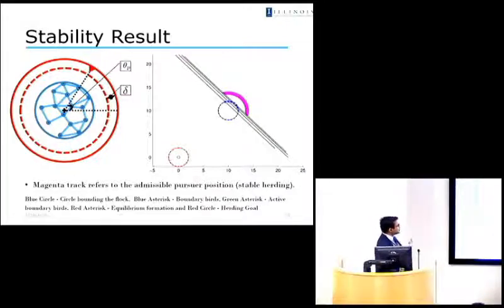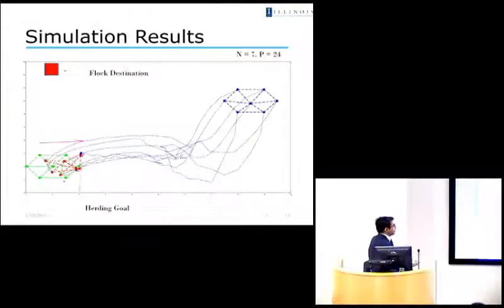So there are some more simulation results that we have where there's this hexagonal flock shape that needs to be directed towards this goal. And the inherent tendency of this flock is to move towards this flock destination. So we can assume that there's an airport somewhere close by, and you would ideally want this flock to be pushed in this direction instead of this direction. And the magenta track shown over here shows the kind of trajectories that the falcon would take to solve the herding problem.